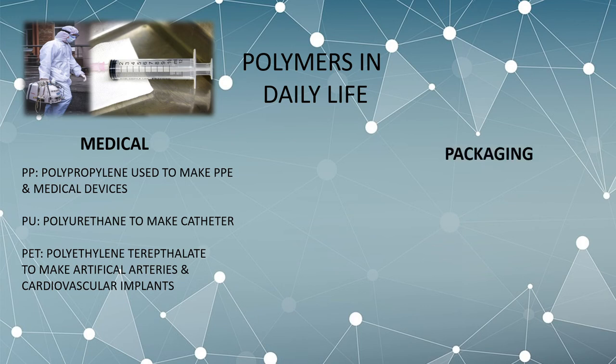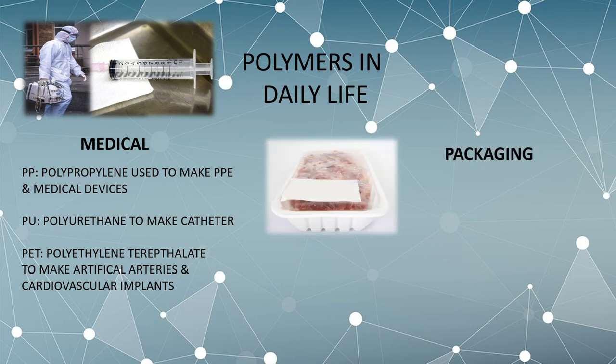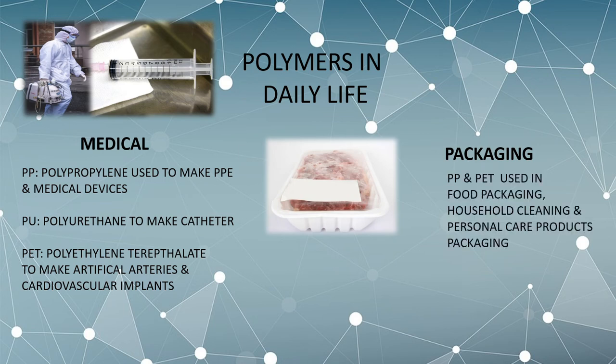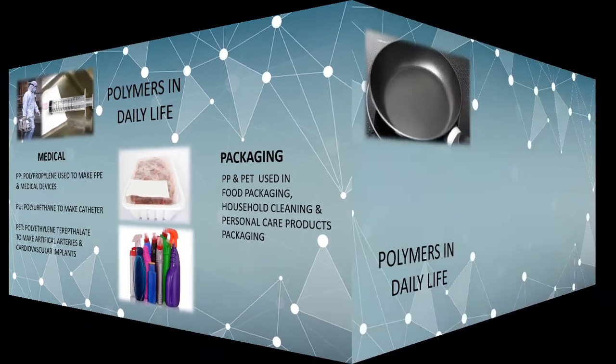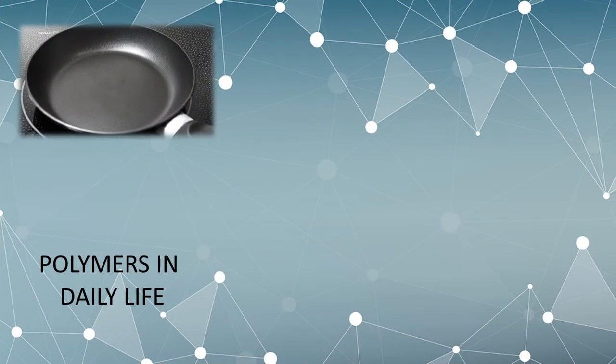PET and polypropylene are the two most widely used polymers for making food packaging, personal care product packaging, and household cleaning product packaging. Teflon is a coating polymer material used in non-stick cookware.